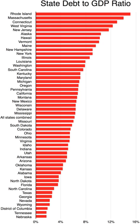The executive branch of every state is headed by an elected governor. Most states have a plural executive, in which several key members of the executive branch are directly elected by the people and serve alongside the governor. These include the offices of lieutenant governor, often on a joint ticket with the governor, attorney general, secretary of state, auditors or comptrollers or controllers, treasurer, commissioner of agriculture, commissioner of education, and commissioner of insurance. Each state government is free to organize its executive departments and agencies in any way it likes.